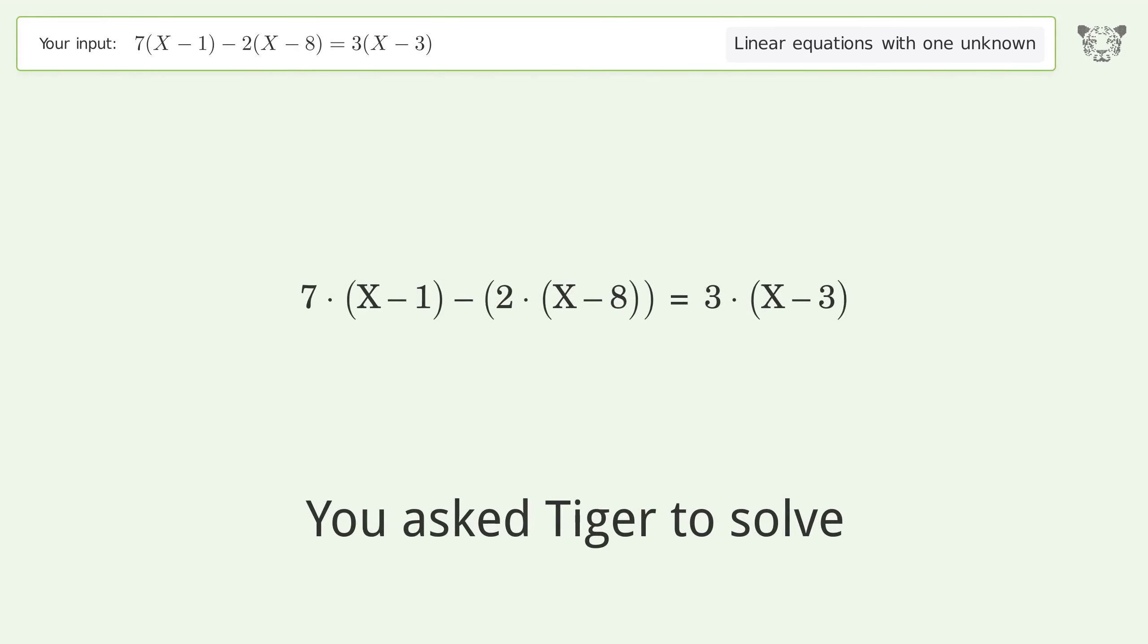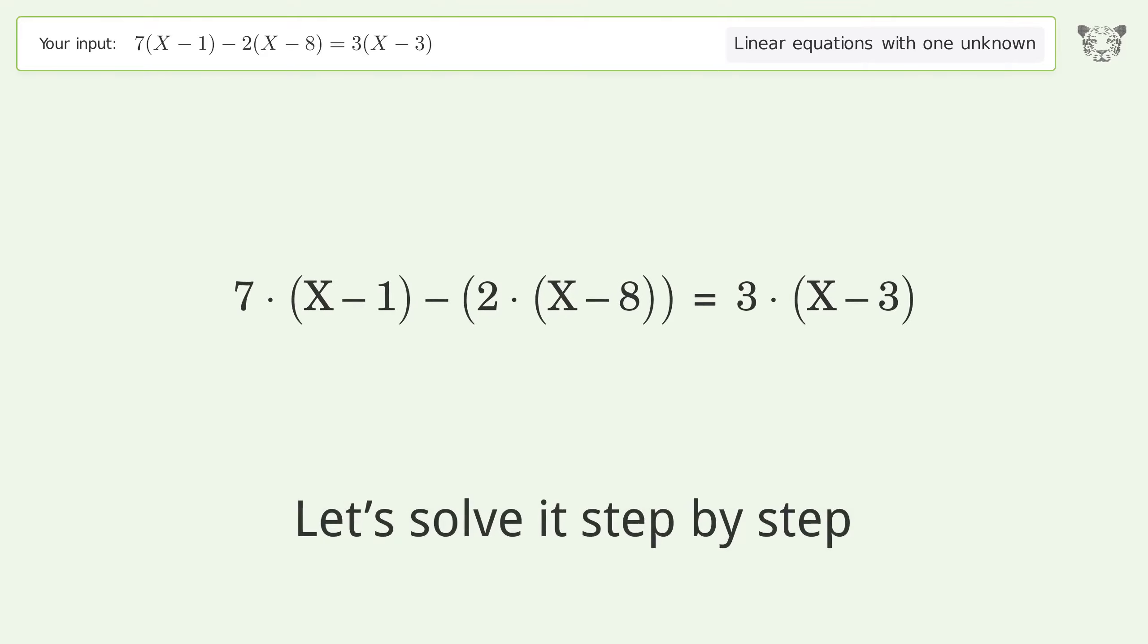You asked Tiger to solve this linear equation with one unknown. The final result is x equals negative 9. Let's solve it step by step and simplify the expression.